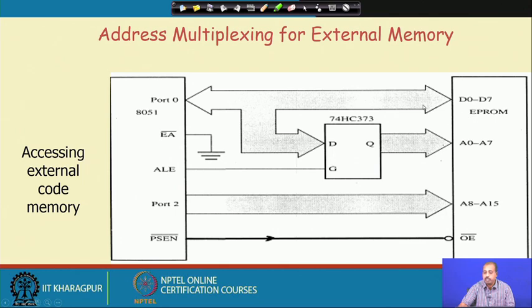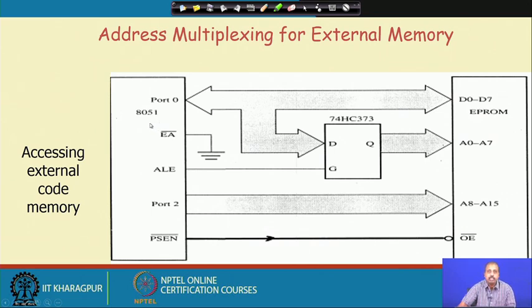As far as the EPROM is concerned, it continually sees address bits A0 to A7 and A8 to A15. When the PSEN bar line is activated it is connected to the OE bar pin of the EPROM chip — OE bar is the same as read bar, i.e., output enable. When these lines are asserted, the EPROM puts the content on the data bus, and the data bus through Port 0 will reach the 8051. This is how we connect external program memory to the 8051.